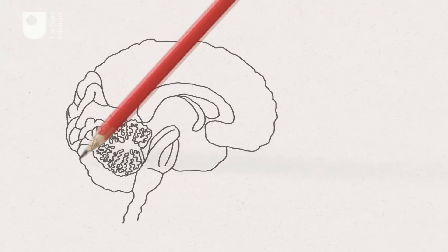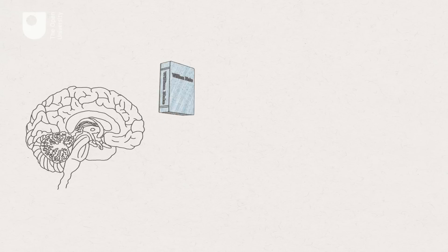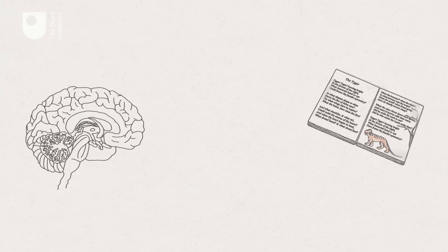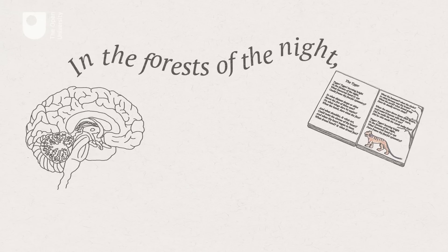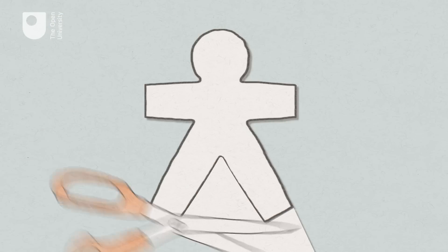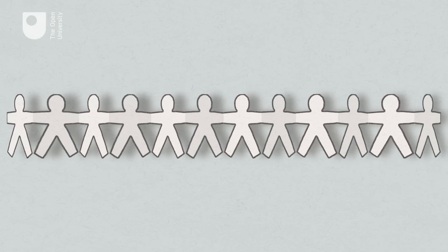People take a number of different positions about how exactly it should be studied — for example, whether the focus should be more on the products of creativity or on its process. But despite these differences, it remains a very important topic for people from a wide range of disciplines, because of the key roles it plays in human communication: the fact that it's a way of making what we say or write stand out, of initiating and responding to change, and ultimately of organising our understanding and experience of the social world.